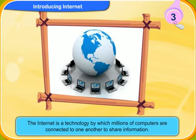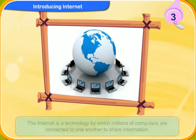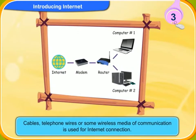The internet is a technology by which millions of computers are connected to one another to share information. How are so many computers connected to each other? Cables, telephone wires, or some wireless media of communication is used for internet connection. So these computers with internet connection can easily access the information available from all around the world.